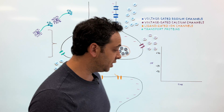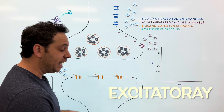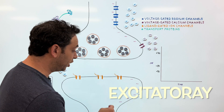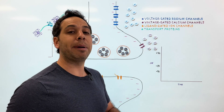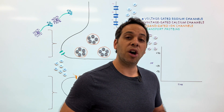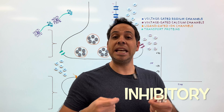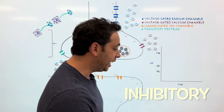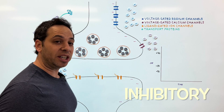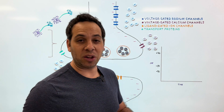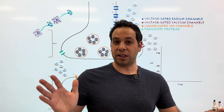Those messages can be excitatory — we're going to increase the likelihood that the cell is going to fire. Think about a green light. Or these messages can be inhibitory, in which we want to decrease the likelihood that the next cell is going to fire. Think about a red light.